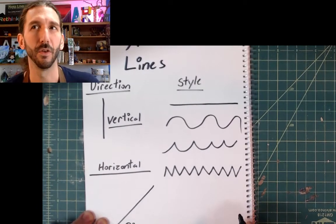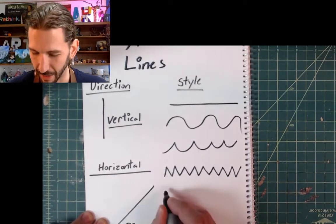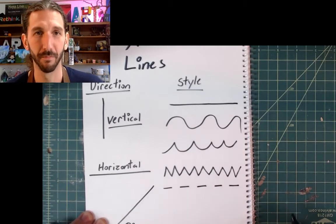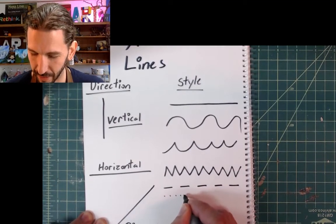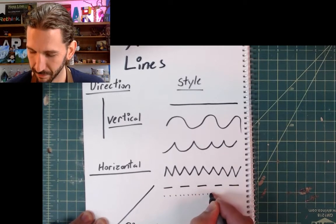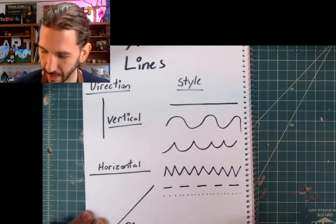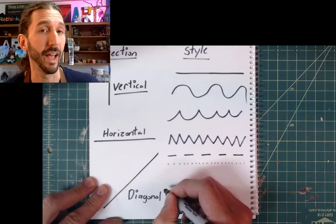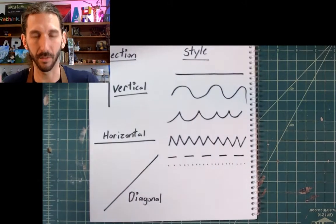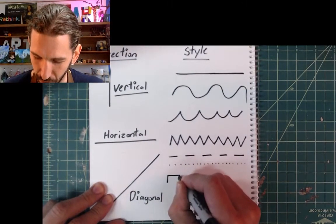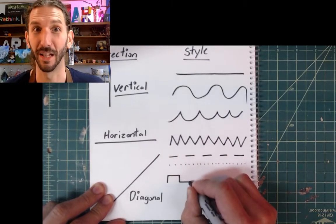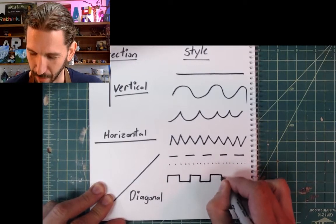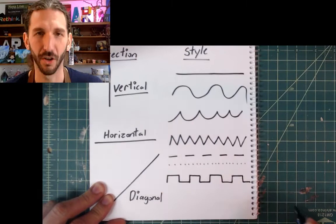What other kinds of lines could we make? Think of the road — have you ever seen a dashed line in the road? How about a dotted line? It's still a line. And then there's some more interesting lines we could try. How about a castle? Can you picture the top of a castle? It usually has these crenelations at the top — that is what you call this pattern at the top of a castle. I like to call that the castle line.